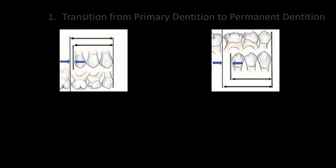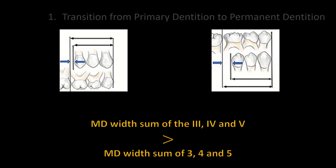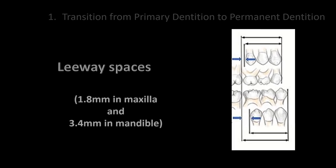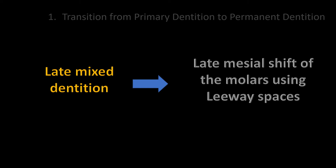In contrast to the incisors transition, the mesiodistal width of the canines and premolars is smaller compared to their predecessors. This difference is called leeway spaces. The total of the right and left sides is 1.8 mm in the maxilla and 3.5 mm in the mandible. As the difference is larger in the mandible, it has crucial importance for the molar relationship to transition to class I.